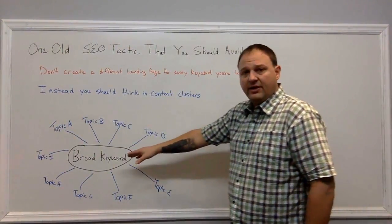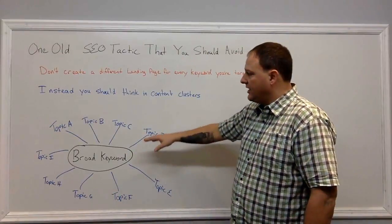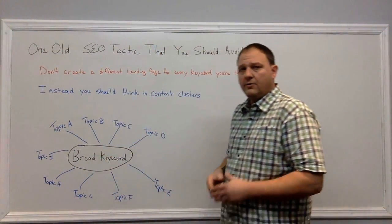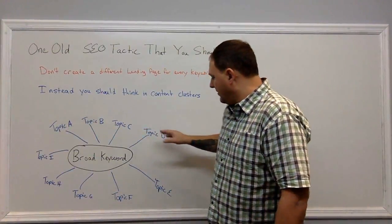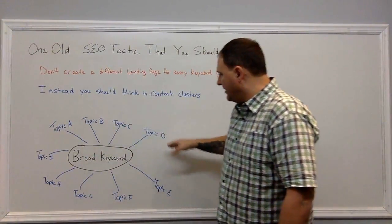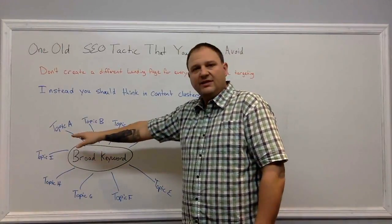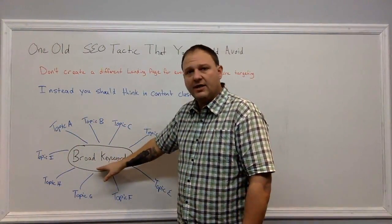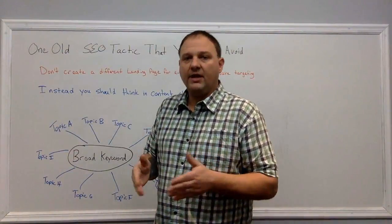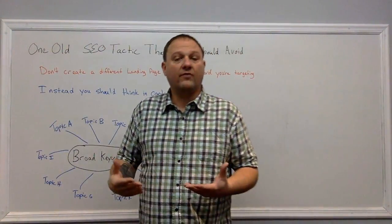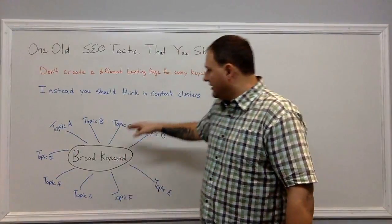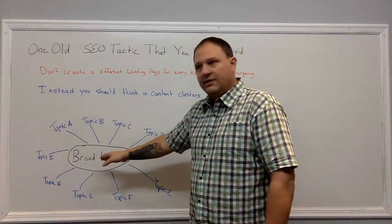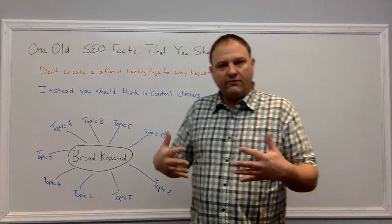Nowadays, instead of just creating one landing page, you should have tons of content around this topic. You might have topic A, topic B, topic C — think of these as different blog posts. Maybe this broad keyword is a landing page that's set up more for conversions, and each of these related topics could be linking to this page. That's your internal linking structure.